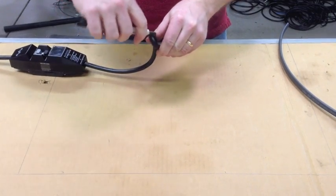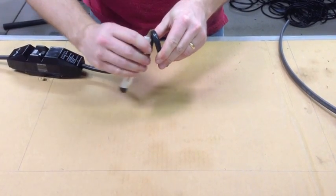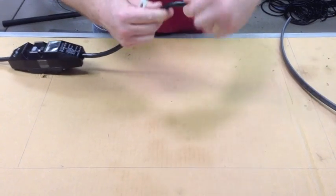Remove the outer jacket of the cable you're going to splice into. Make sure you do not cut too deep to cut into the cables.